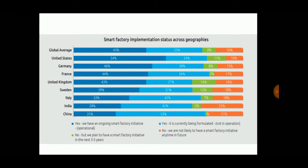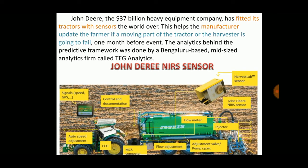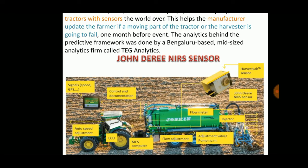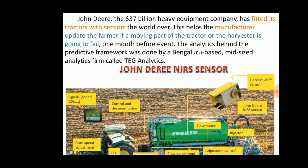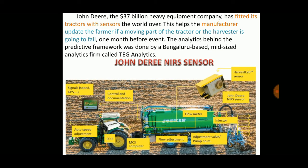An interesting case study is John Deere, a heavy equipment company that fitted its tractors with many sensors — including flow adjustment sensors and ECUs — for control and documentation. This allows the manufacturer to update the farmer if a moving part of the tractor or harvester is likely to fail up to one month in advance. The predictive analytics framework was driven by Bangalore-based Stage Analytics.